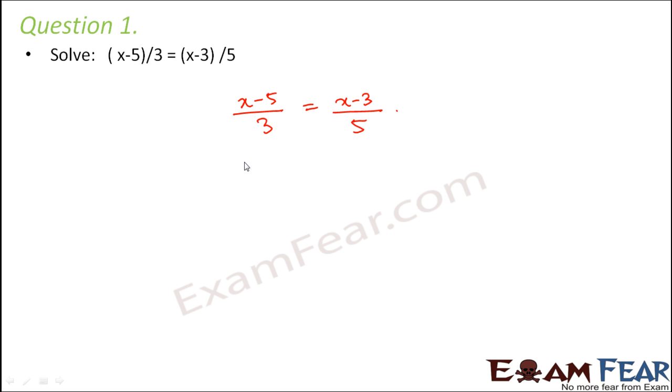So this is going to be applicable for tip 1 because here we have it in the form of numerator by denominator equals to numerator by denominator. So what will we do here? We will simply cross multiply. So let's cross multiply.